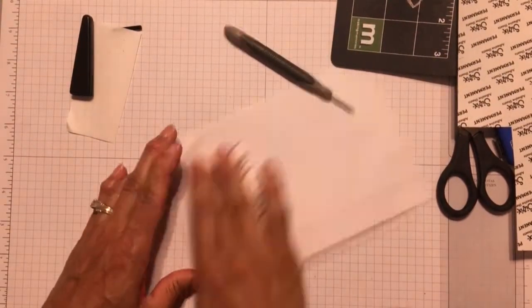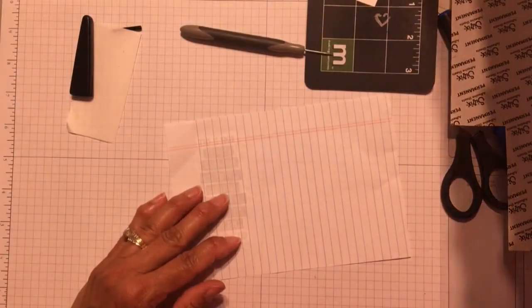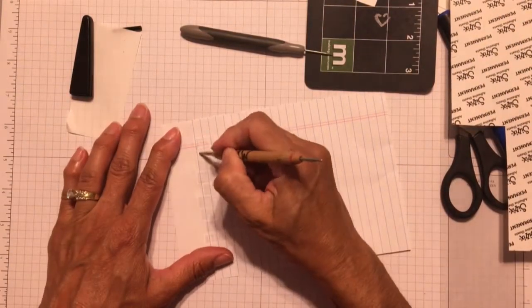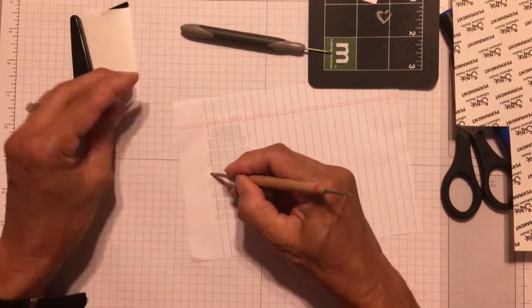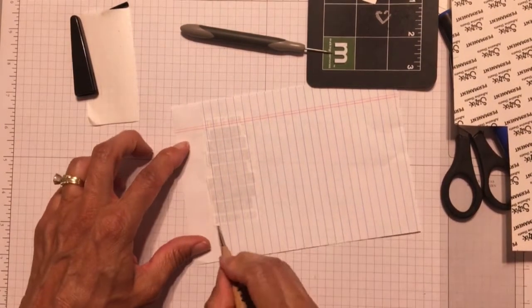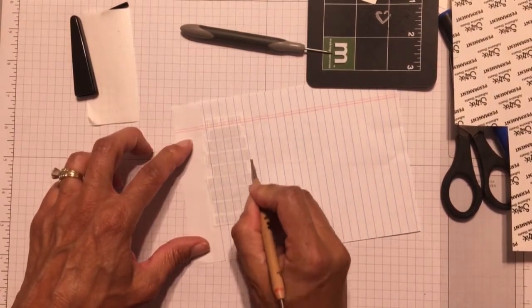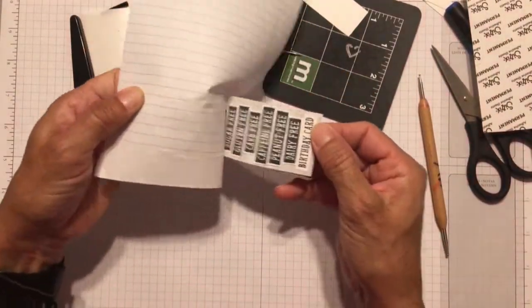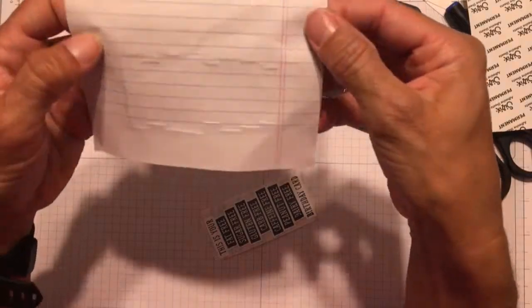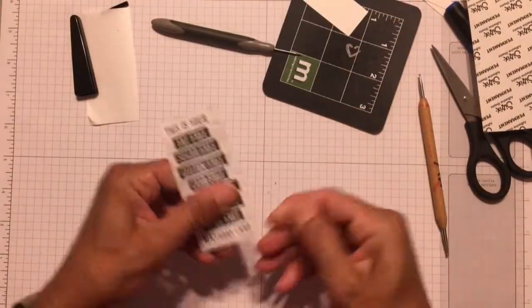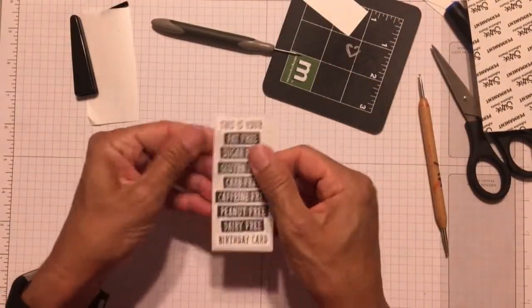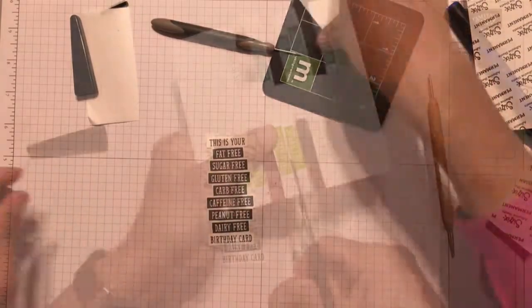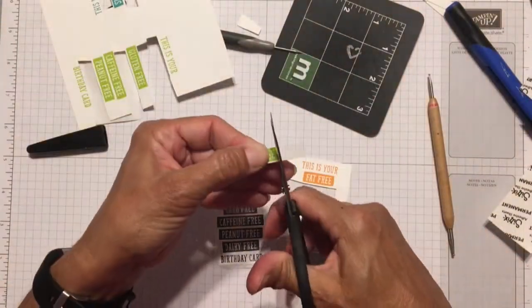And then take a scrap of paper and rub it all over the adhesive sheet and the sentiment. And use a scoring tool to kind of burnish all the way around the sentiment. And then when I pulled off the scrap piece of paper, it pulled up all that adhesive that was around the sentiment. So I got a much cleaner edge this time.